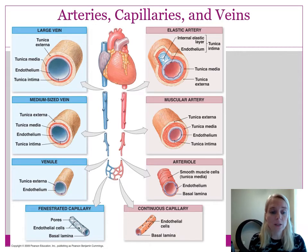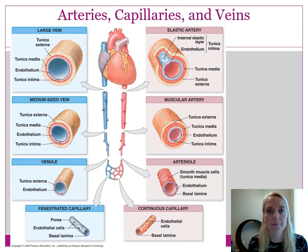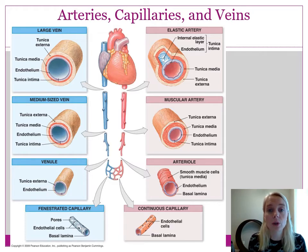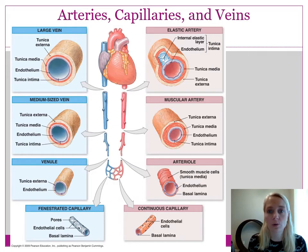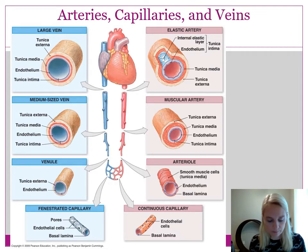Venules fuse into medium-sized veins — your brachial, radial, and ulnar veins, most of the veins on your blood vessel list would be considered medium-sized veins. These then fuse into large veins — your brachiocephalic vein, and your superior and inferior vena cavas are great examples. Large veins have all three layers: a small tunica media, the endothelium of the tunica intima, and the tunica externa.